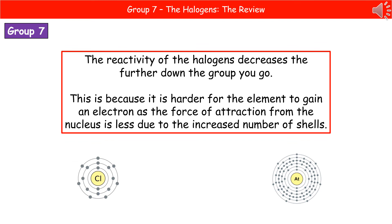The reactivity of halogens decreases the further down the group you go, because it becomes harder for the element to gain an electron. As you go further from the nucleus, more electron shells build up and the force of attraction becomes weaker. Because halogens need to attract an electron to complete their outer shell, having lots of shells makes this harder. Chlorine, near the top of the group, has fewer shells, is closer to the nucleus, has a stronger force of attraction, and therefore gains the electron more easily and is more reactive.